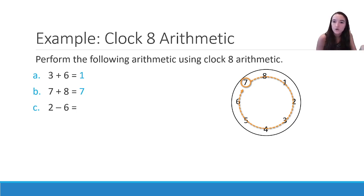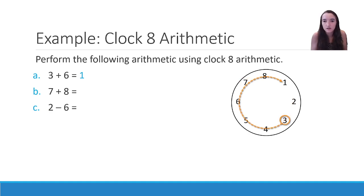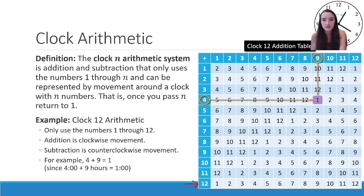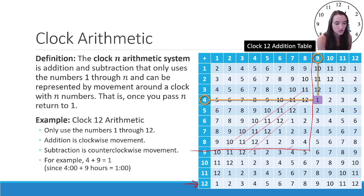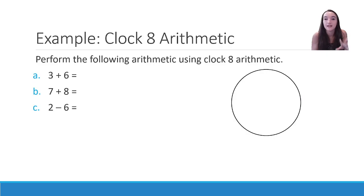For 2 minus 6, subtraction means going backwards. I start at 2, go backwards by 6 spaces, and I get 4. So 2 minus 6 is 4 in Clock 8 arithmetic. We can create a Clock 8 addition table the same way we created our Clock 12 table — it'll have the same cyclical pattern, just cycling through 1 through 8 instead. We can create these clock tables with any whole number.